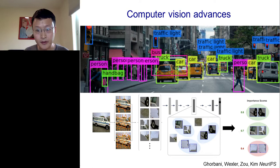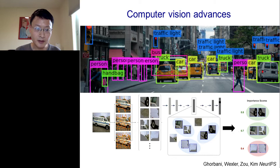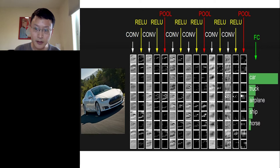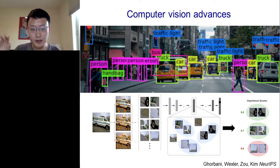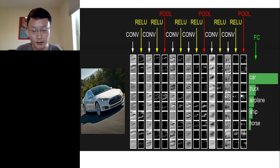A lot of the work in my group is actually in developing these computer vision algorithms, and many of these are also widely used by some of the companies that you're familiar with. A lot of the really advances in computer vision recently is based on advances in artificial neural networks. For example, if you wanted to build a self-driving car, you would like the car to be able to look at the surroundings and identify what are other cars and what are other individuals — to detect these different objects and characterize what they are.